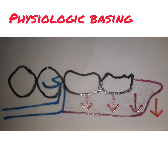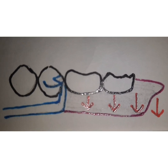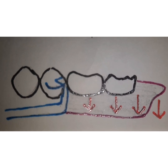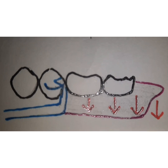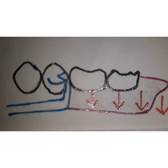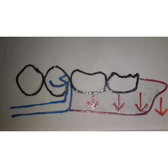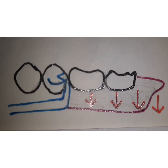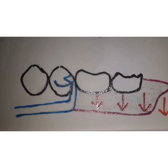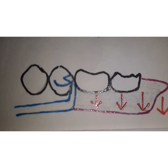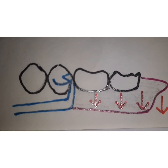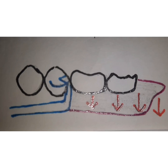The second concept is physiologic basing, which is based on recording the edentulous tissues in a functional form rather than an anatomic form. Proponents believe the tissues should be recorded while in function so they can perform better. During the functional impression, the mucosa covering the edentulous ridge is displaced or depressed into its functional form.